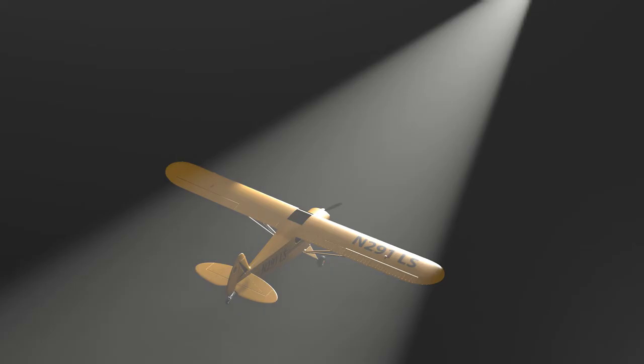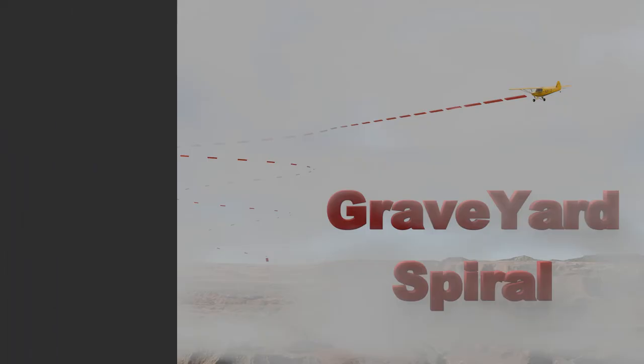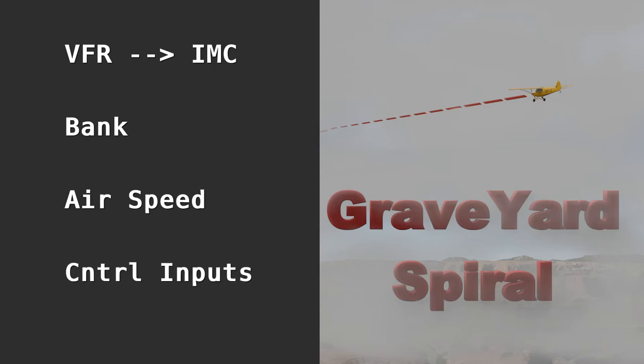The Graveyard Spiral has several characteristics. It generally occurs when flying under visual flight rules into instrument meteorological conditions, associated with decreased visibility secondary to clouds, fog, mist and or nighttime conditions. It starts with a gentle unrecognized bank of the airplane. This may be due to unequal lateral loading, such as more gas in one wing than the other, uncoordinated trim, cross winds, unintended control pressures, or other factors.